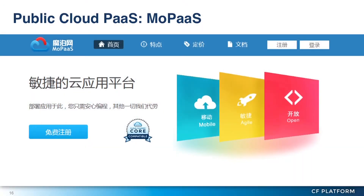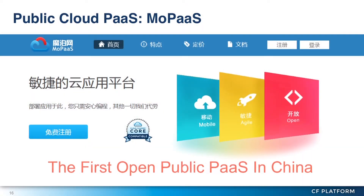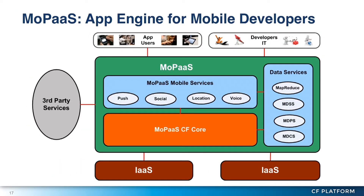This is our public website for our public cloud PaaS, which we call MoPaaS — it's a PaaS for mobile. We use Cloud Foundry as our core. Built on top of that core, we have a mobile service extension layer, including common mobile services like push notifications, social networks, location services, voice, and more.